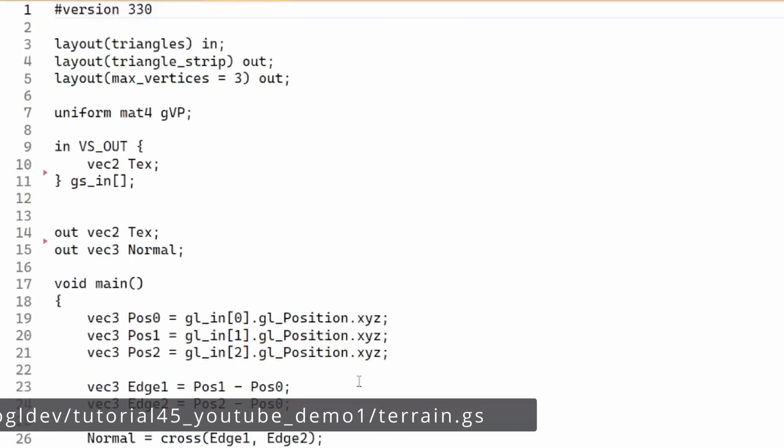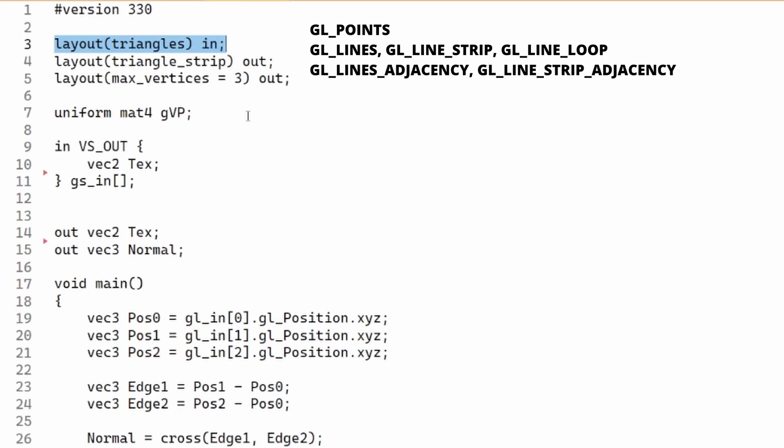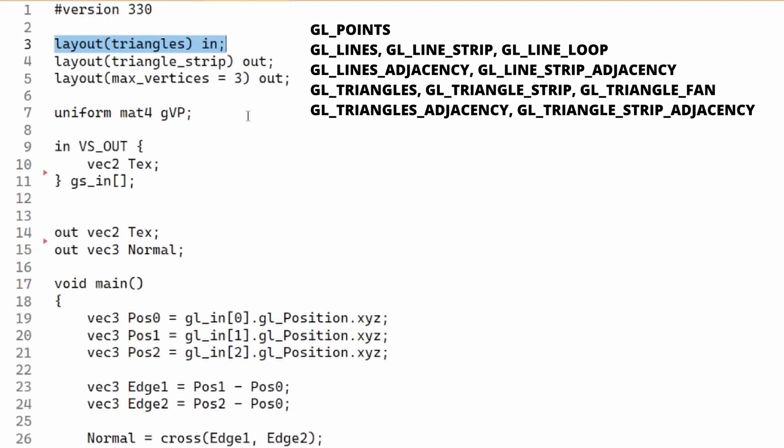The GS itself is written in GLSL as usual, but there are a few special keywords that provide it with important information. First of all, we must declare the input primitive type. The available options here are points, lines, lines with adjacency, triangles, and triangles with adjacency.